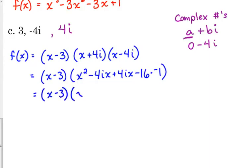So, let's see what we've got here. The 4ix's cancel. Negative 16 times negative 1 is plus 16. Now, let me point something out before we finish this one off.